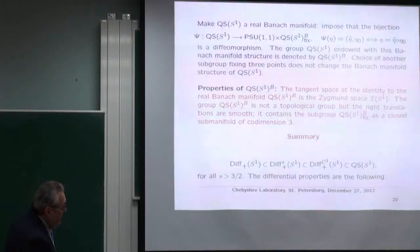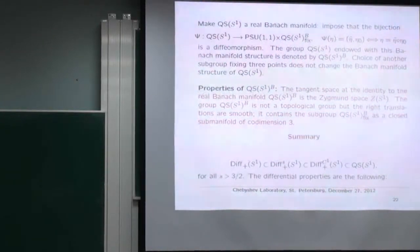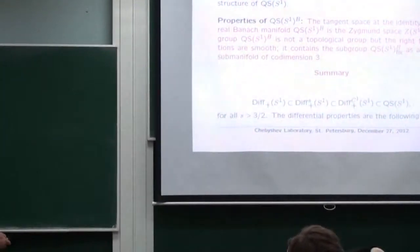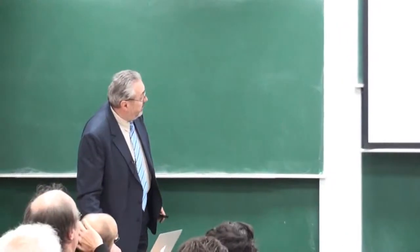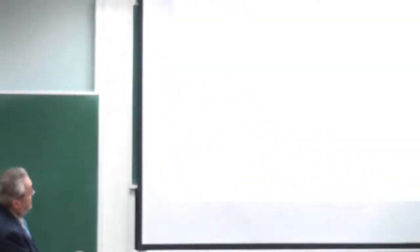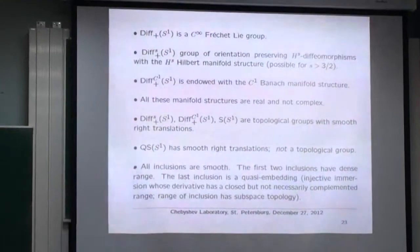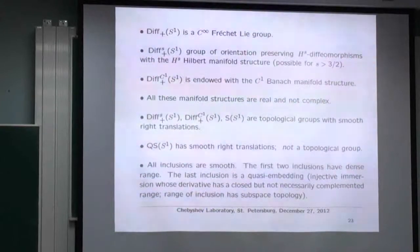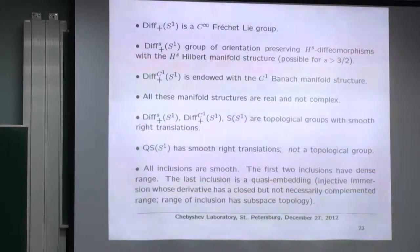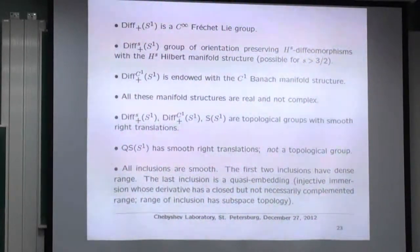Here is a list of groups: C∞-diffeomorphisms, H^s-diffeomorphisms (Sobolev with s > 3/2 in dimension 1 — the critical index is n/2 + 1), C¹-diffeomorphisms, and quasi-symmetric homeomorphisms. Each comes with its own topology. The C∞ case gives a Fréchet group; the H^s case with s > 3/2 gives a Hilbert manifold and topological group; C¹ is Banach. All have real (not complex) manifold structures and are topological groups. QS has smooth right translations but is not a topological group. All inclusions are smooth.